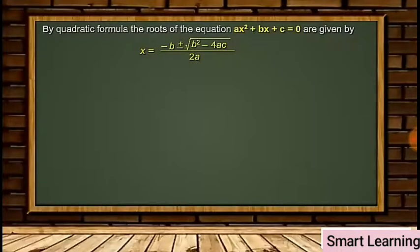We also know that by the quadratic formula, the roots of the equation ax² + bx + c = 0 are given by x = (-b ± √(b² - 4ac)) / 2a.